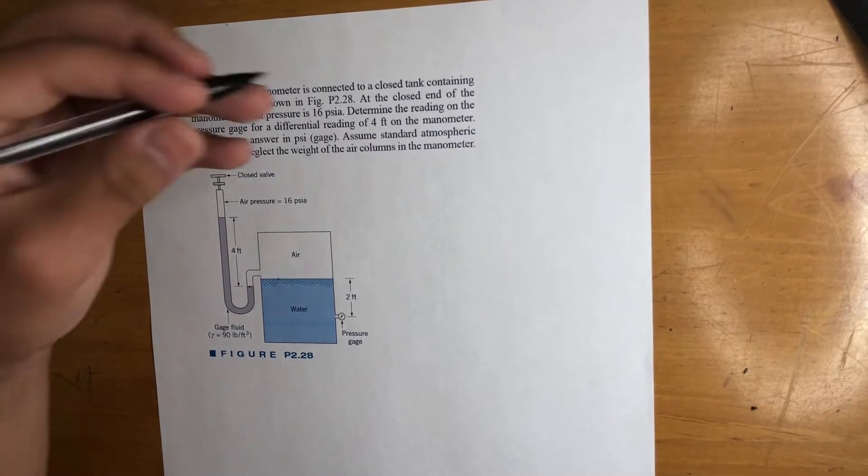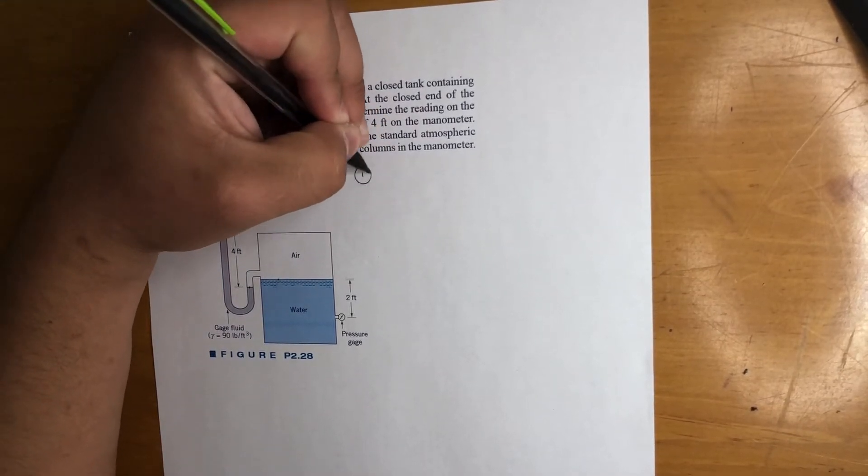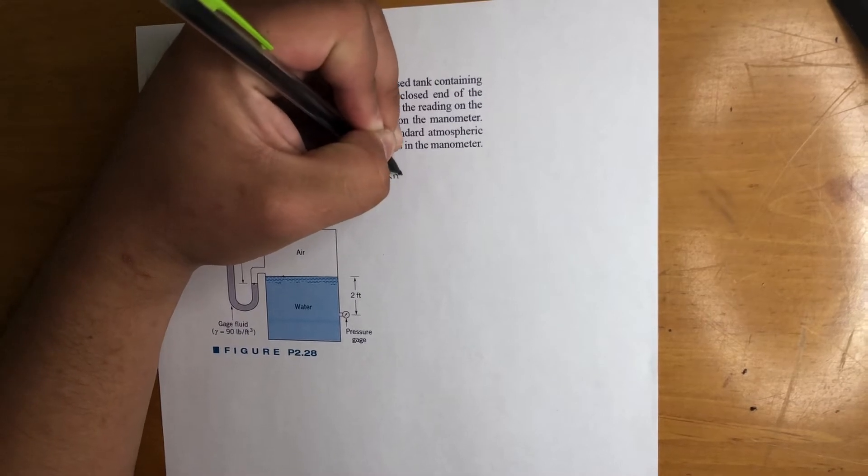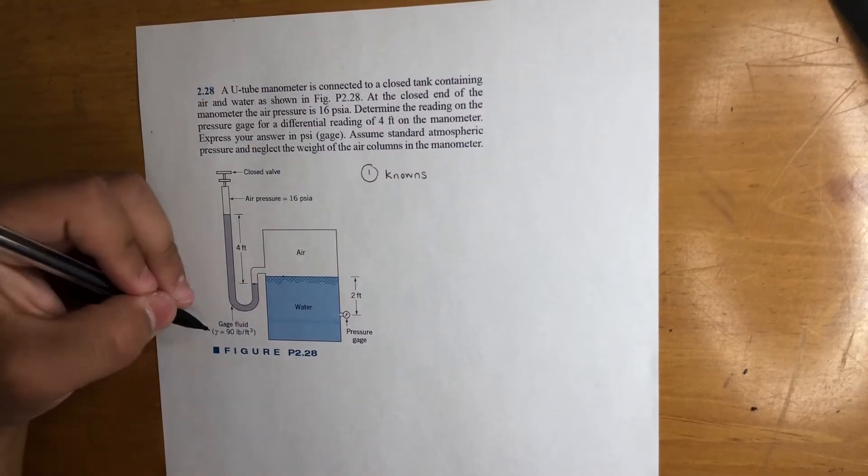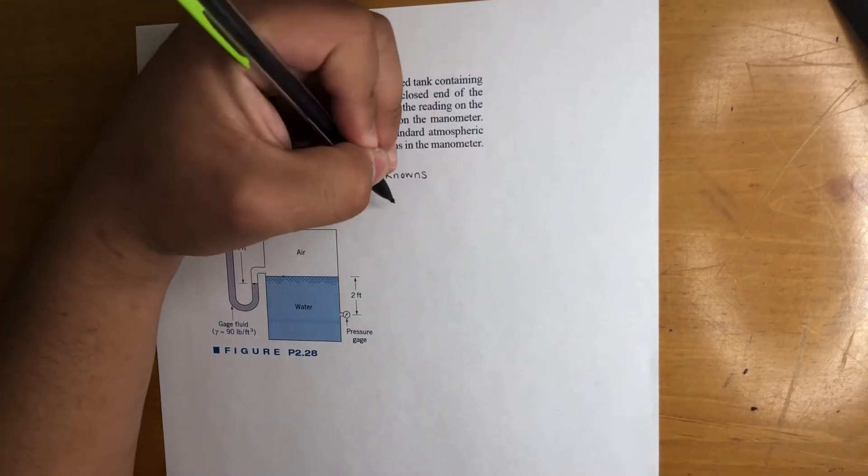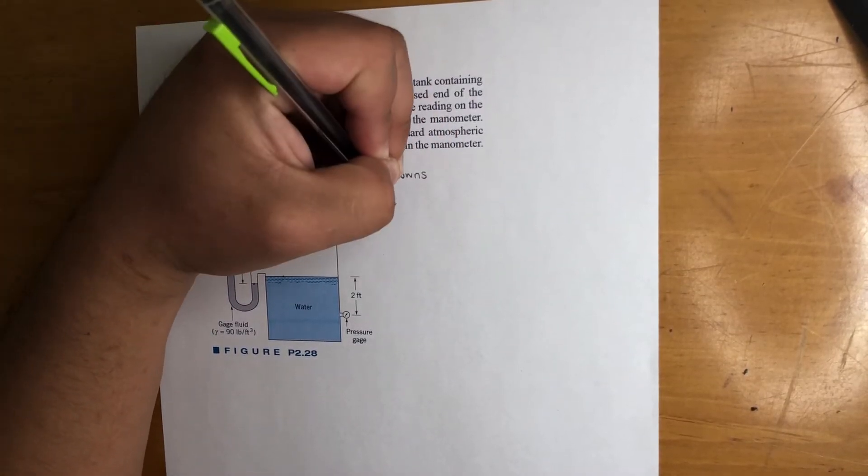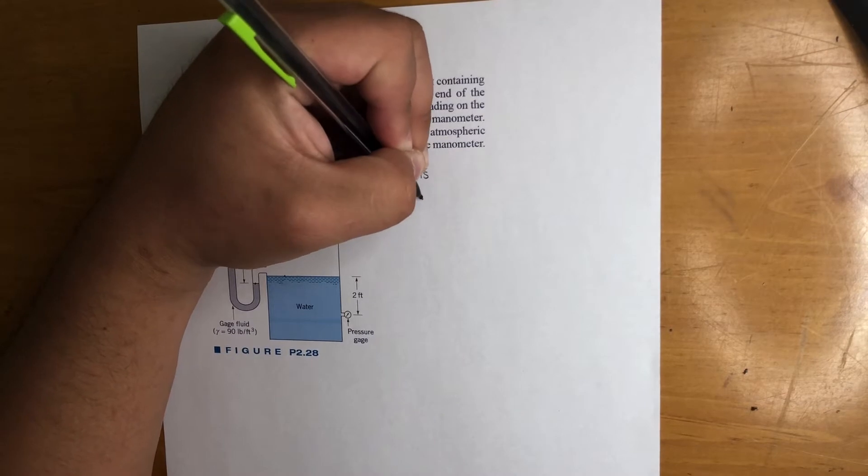So first we start off with the knowns. They give us gamma of the fluid—that's cool. So we got gamma of the fluid is 90 pounds per cubic foot.